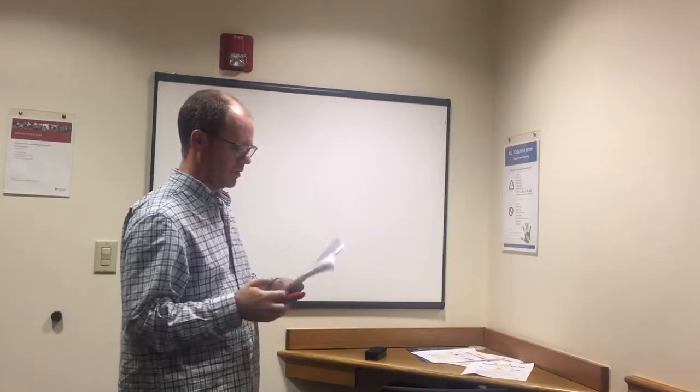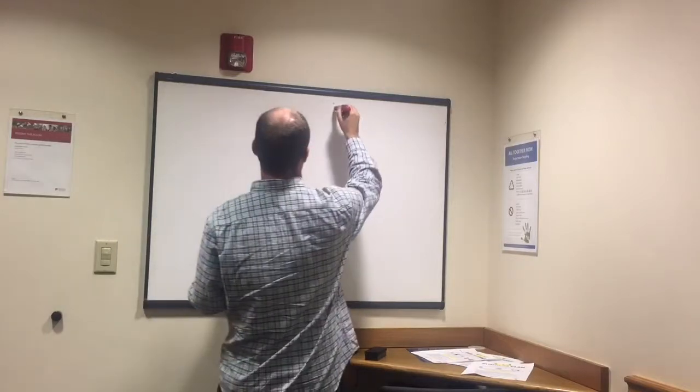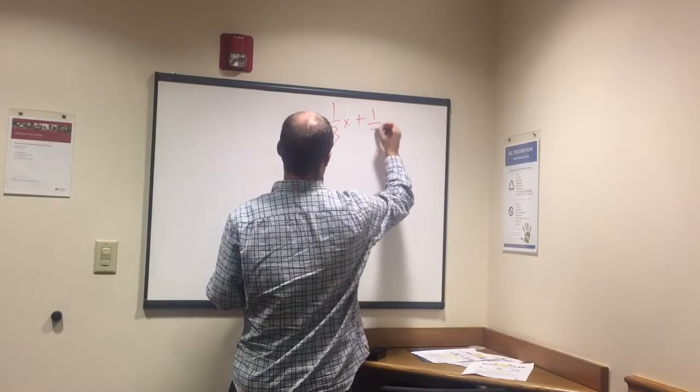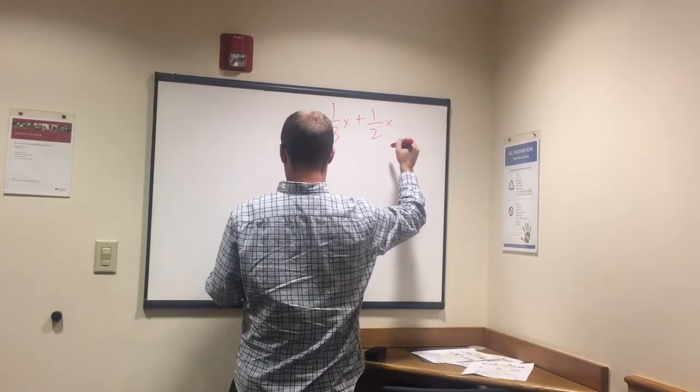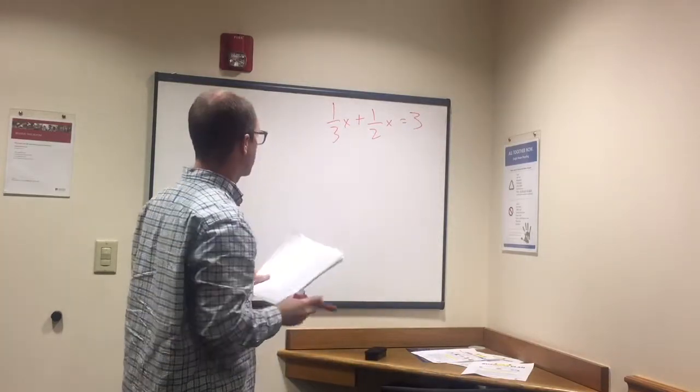2 left. Okay. So now it's with a fraction and variable we're adding here. So we got 1 third x plus 1 half x equals 3. Okay, and what is x?